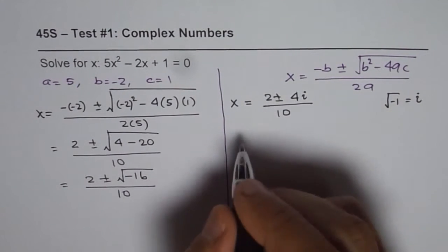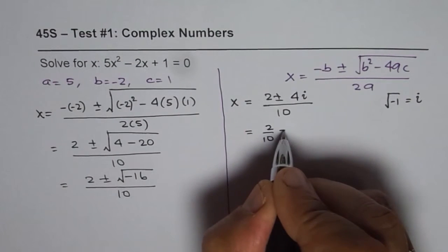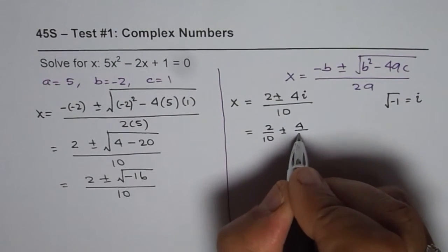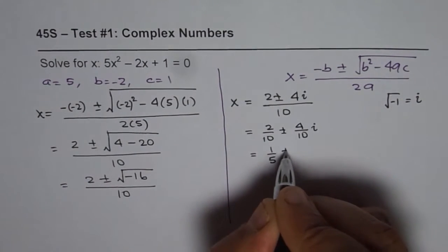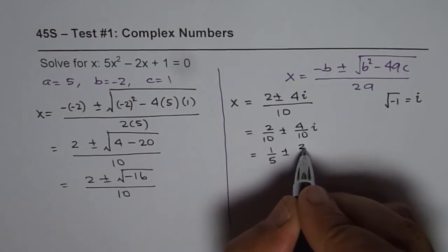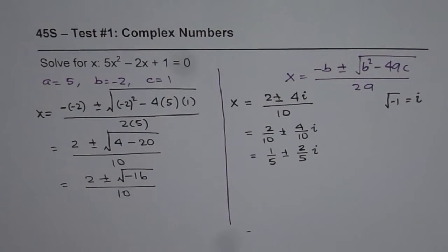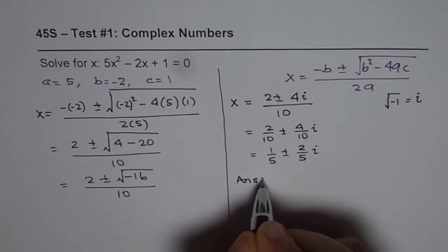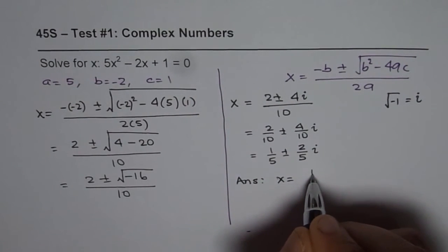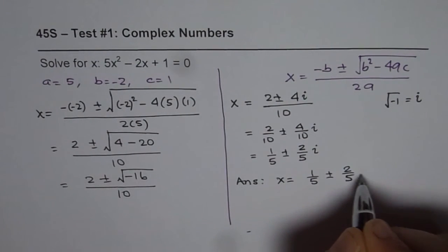So we can write this as 2/10 ± 4/10i. 2/10 is 1/5, plus minus we can simplify this as 2/5i. So these are the 2 roots for the given equation. So our answer is that the solution is x = 1/5 ± 2/5i.